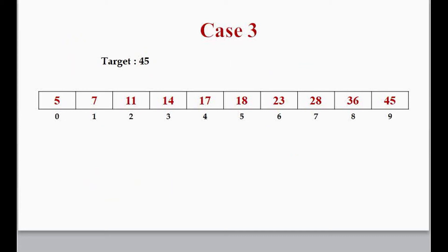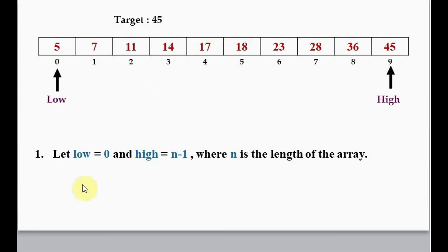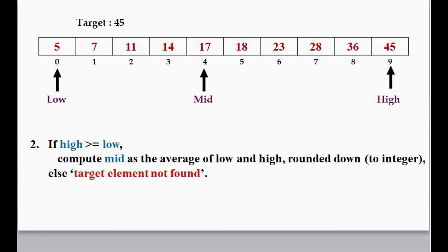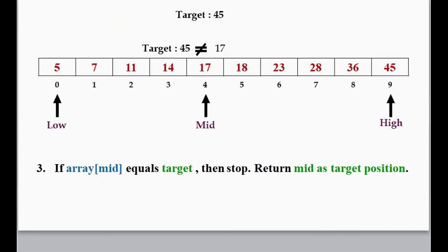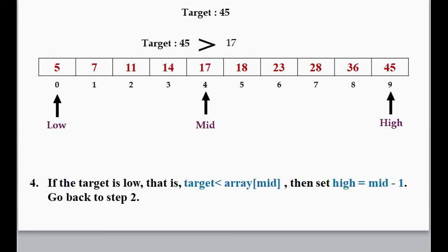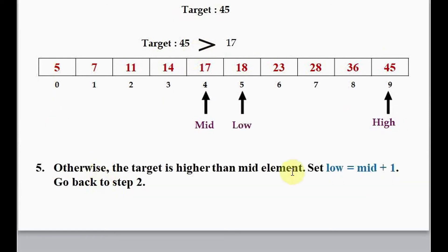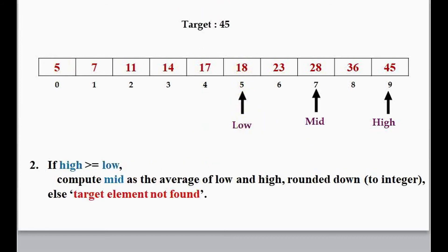In case 3, the target element is 45, which is greater than the mid element. We continue with the same steps: low equals 0, high equals n minus 1. We compute mid, then check if array[mid] equals target — no. Next condition: if target is less than array[mid] — also false, because target is greater than array[mid]. So we go to the last condition and set low equal to mid plus 1. Low becomes 5.